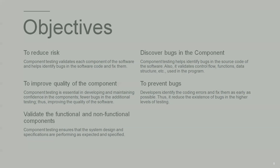The fourth objective is to discover bugs in the components. Every component has a different coding structure because different developers built it. The tester discovers defects in the components, and once the defect is fixed and everything is fine, they integrate with the other components. Preventing bugs is also a major objective of component testing.